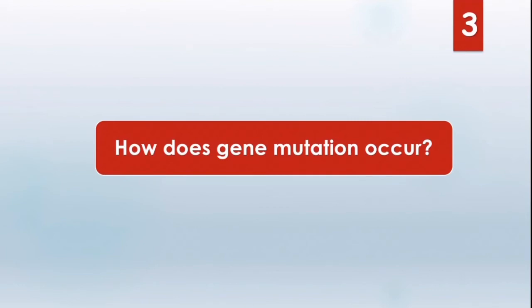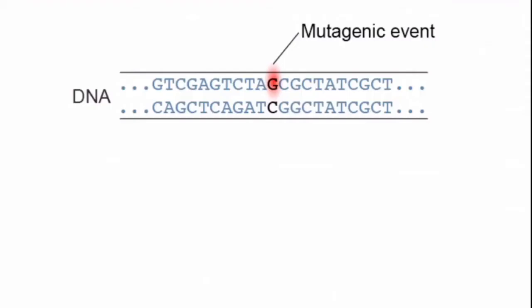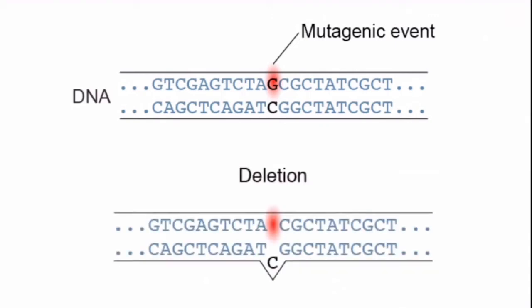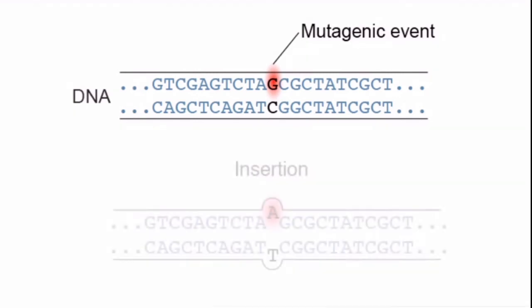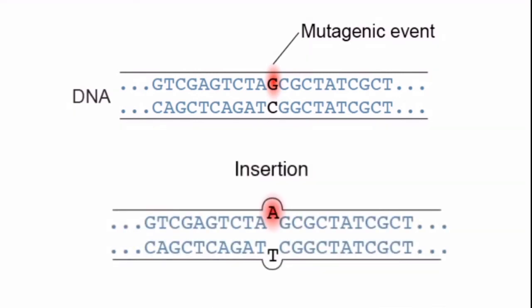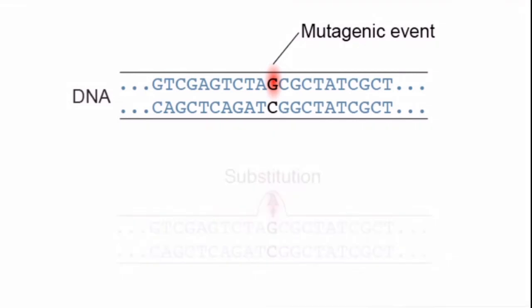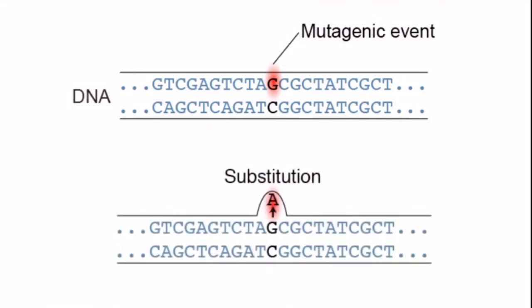Our third question is, how does gene mutation occur? Look at the DNA sequence. See there is a red marked area. If any mutagenic event occurs, certain phenomena can happen. For example, this base pair might be deleted. Or there might be a new base pair inserted in this area. Or there might be a substitution. G might be substituted by A.